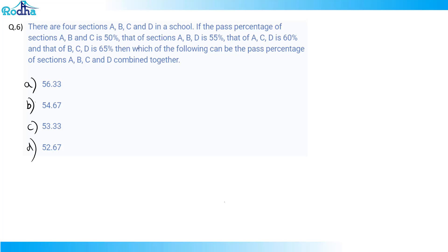Look at this question. It says there are four sections A, B, C, and D in a school. The pass percentage of sections A, B, and C is 50%; of sections A, B, and D is 55%; of A, C, and D is 60%; and of B, C, and D is 65%. Which of the following can be the pass percentage of sections A, B, C, and D combined together?